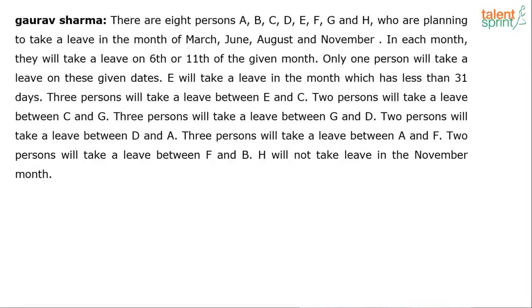We have to find out how these persons have taken the leave. There are 8 persons total, A to H, and 4 months — March, June, August, and November — with 2 dates per month: the 6th and 11th. So 4 months times 2 dates per month gives us 8 dates total.